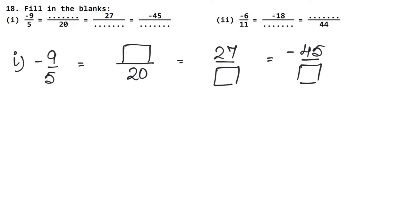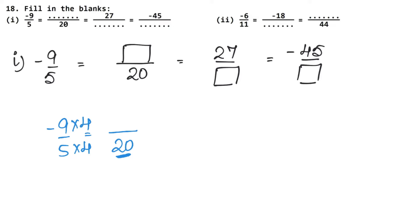This means all these fractions are equal. Now let's see how we multiply. From 5 to 20, we multiply by 4. So for minus 9 upon 5 equals dash upon 20, we multiply 5 by 4 to get 20, and we multiply minus 9 by 4. Minus times 4 gives minus, so 9 times 4 is 36. So we write here: minus 36.